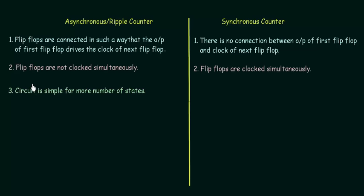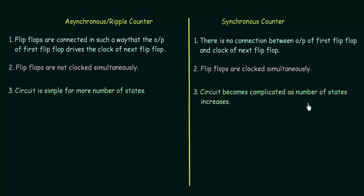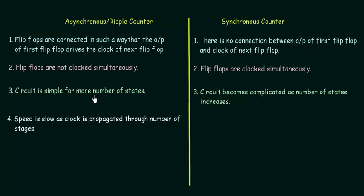The third point: the circuit is simple for a larger number of states in the asynchronous counter. Once you design both types you will see that the asynchronous circuit is simpler for more states, while the synchronous counter circuit becomes complicated as the number of states increases. The fourth point: the speed is slow in the ripple counter because the clock propagates through stages — you must wait for the output of the first flip-flop before the next operates. In synchronous counters the speed is high because all flip-flops operate simultaneously.